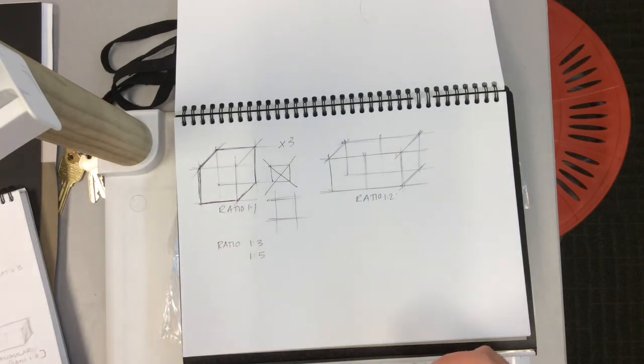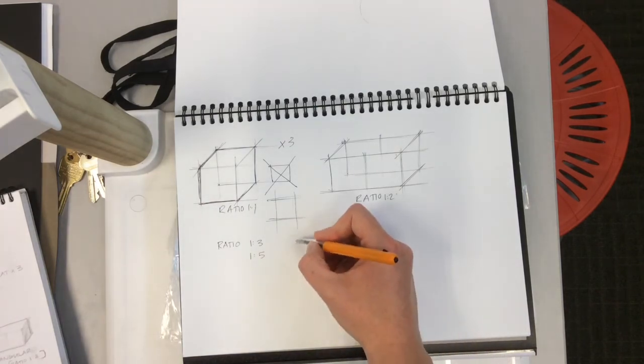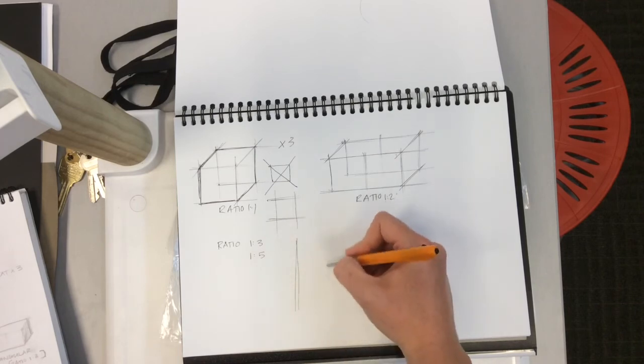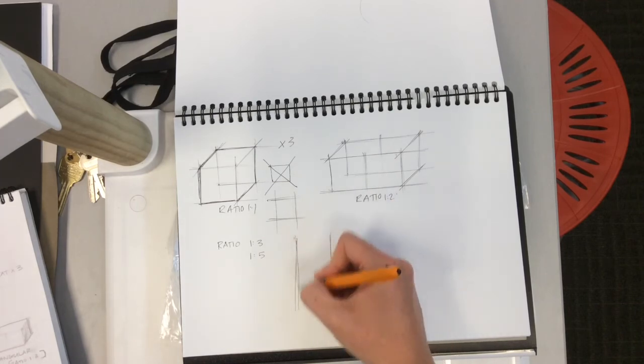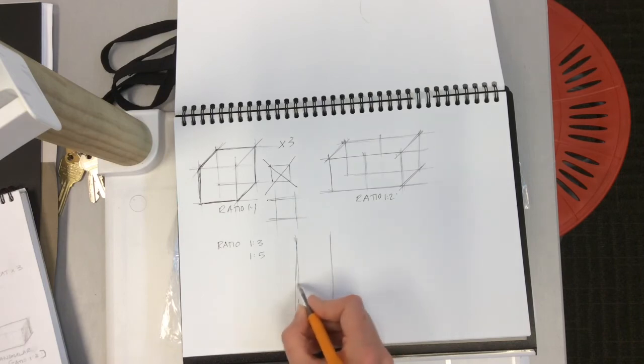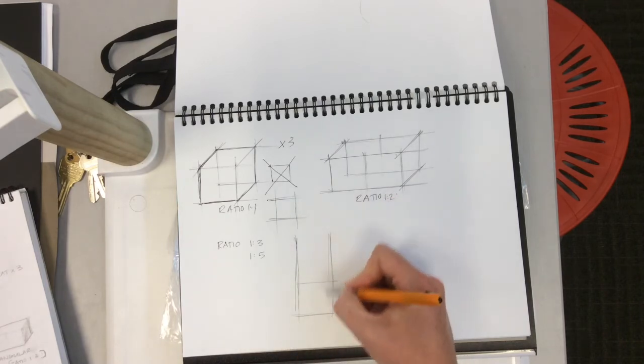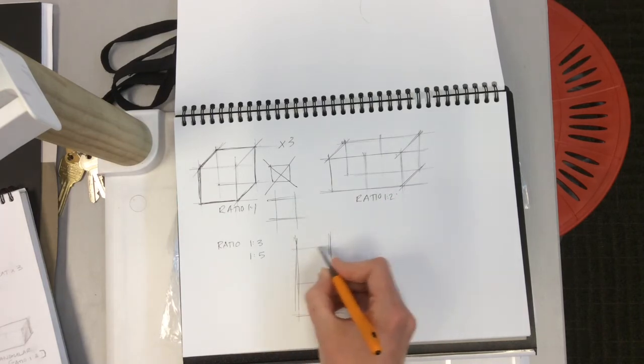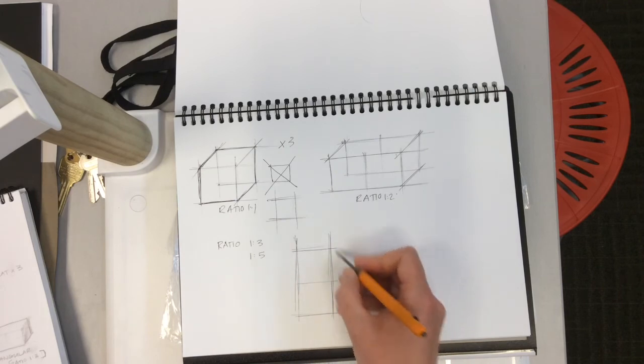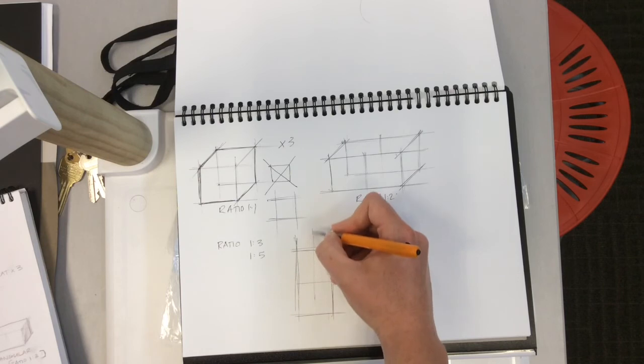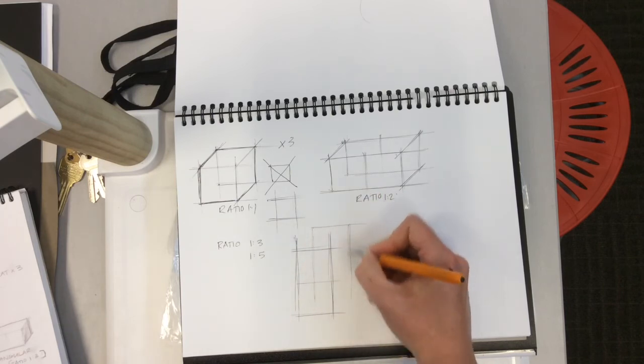Then you can start playing around with the orientation of your forms, making your blocks sit vertically, ratio 1:2, and then getting your blocks sitting behind it.